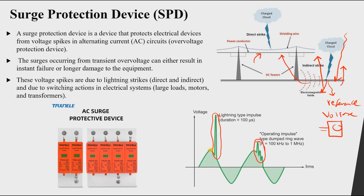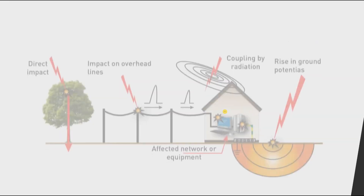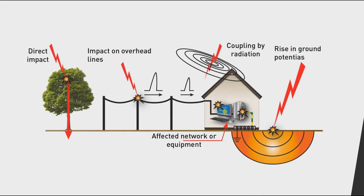If our equipment operates at 220V, you can see a very large change — even one kilovolt, for example — and all of this can affect our equipment.